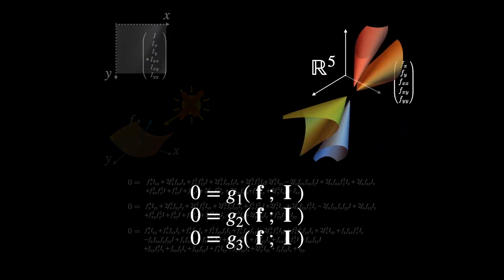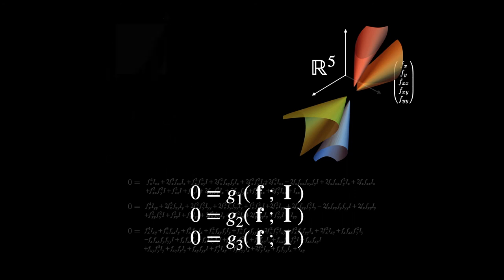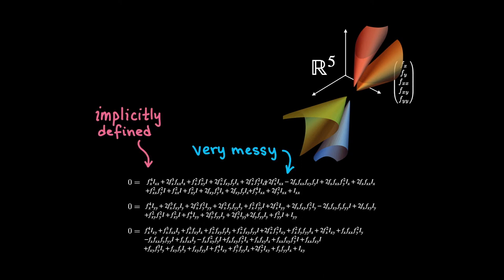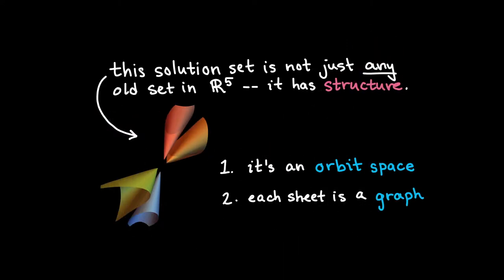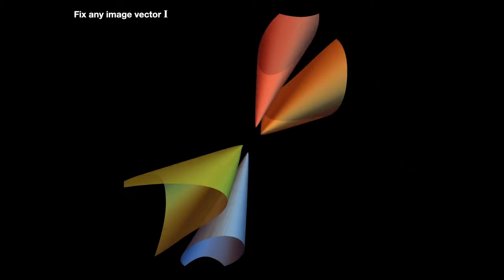Now that we understand this, we're faced with the following challenge. Given an image vector, we need to represent the shape set in a convenient, explicit way. This is hard because the shape set is defined implicitly by three messy polynomials. The first thing we can do is exploit two useful properties of the set. These hold for any image vector, but I'll illustrate them for a particular one.